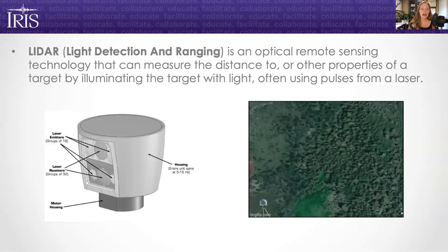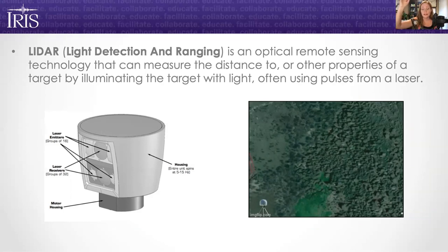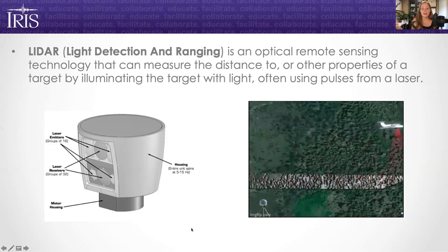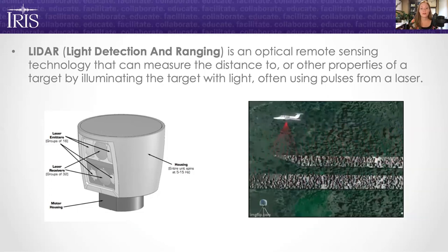We can also use other cool technology like LIDAR — light detection and ranging. This is an optical remote sensing technology that we can mount in the belly of an airplane, a drone, or a helicopter. It uses a laser — not like laser beams on sharks, but a non-harmful laser — that measures the distance from the airplane to the ground by seeing how long it takes the laser to bounce off the ground and come back. The laser scans back and forth perpendicular to the direction the airplane is flying, and we can map the ground surface in three dimensions.